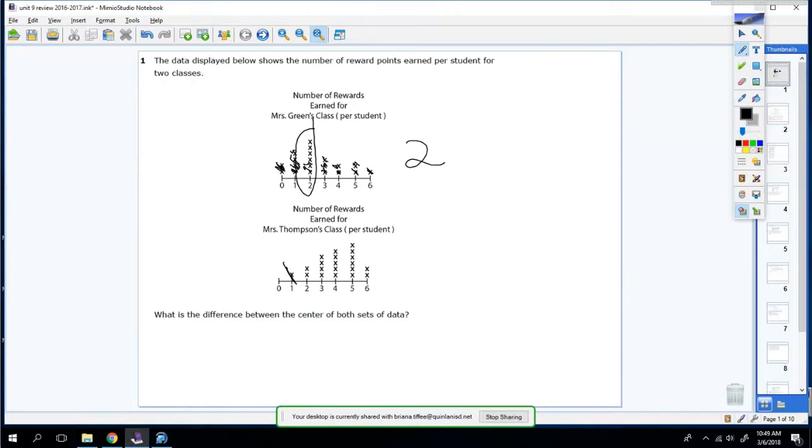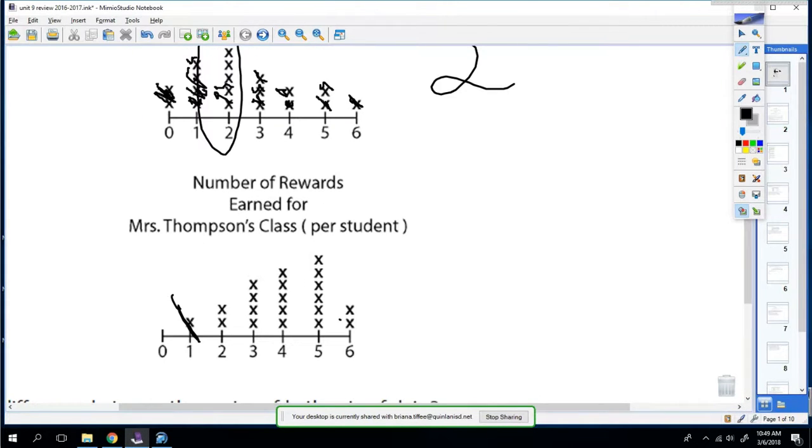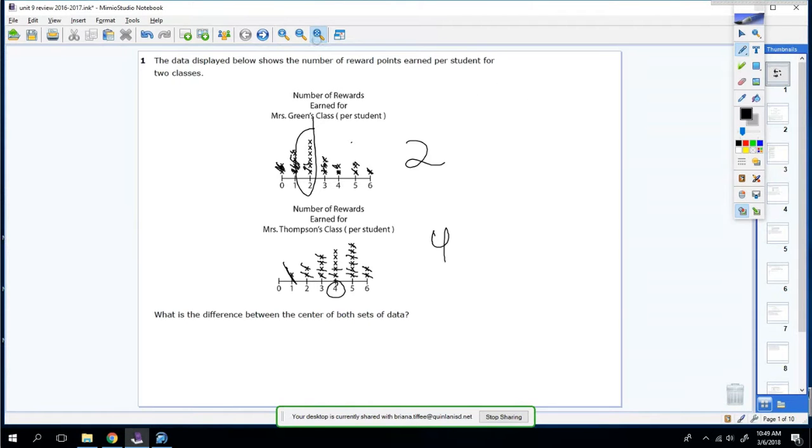So we're going to do the same thing here. I'm going to actually zoom it in so I can see it much better. So then I get four. So this is asking for the difference in centers. So the difference means subtract. So you're going to do four minus two equals two.